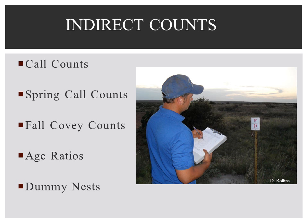Indirect count methods include call counts, spring call counts, fall covey counts, age ratios, and dummy nests.